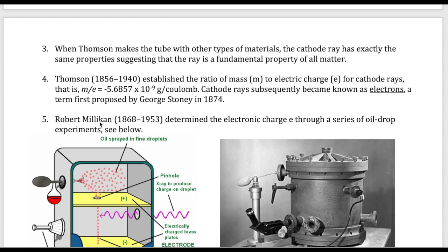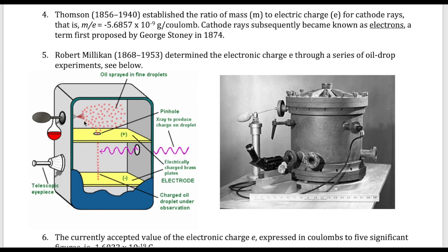Now Millikan was actually the person who then figured out what the actual charge is. And because you have the mass over charge ratio, if you know the charge, you can also figure out the mass. The way he did his experiment is as follows. And this is very well known experiments called the oil drop experiment.